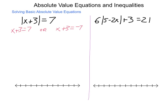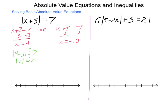We need to solve these two individually. Left-hand side: subtract 3 using properties of equality — x equals 4. Right-hand side: subtract 3 again — x equals negative 10. So we have two possible solutions: x can be 4 or x can be negative 10. We need to check each one. The absolute value of 4 plus 3 is supposed to equal 7 — that's the absolute value of 7, which is 7. So 7 equals 7, and that checks out.